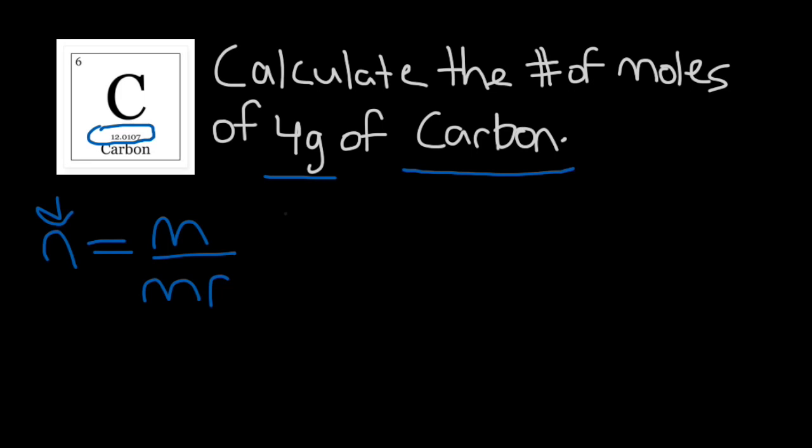It's going to be a different value, depending on the element that you're using, and it might be positioned differently in the periodic table you're using. But, generally, they're pretty easy to identify. They're usually long numbers, such as this one right here. Our mass is our 4 grams. And, our molar mass is our 12.01 value. So, we'll write that underneath right there.